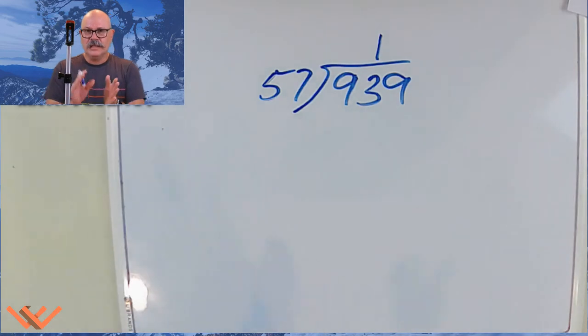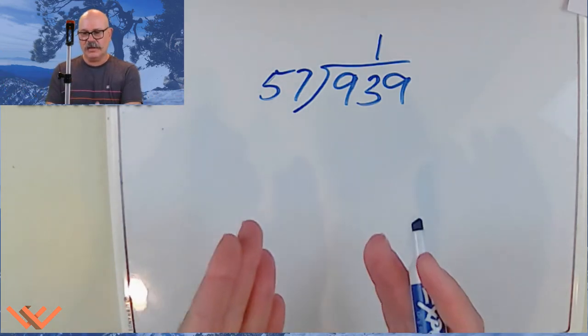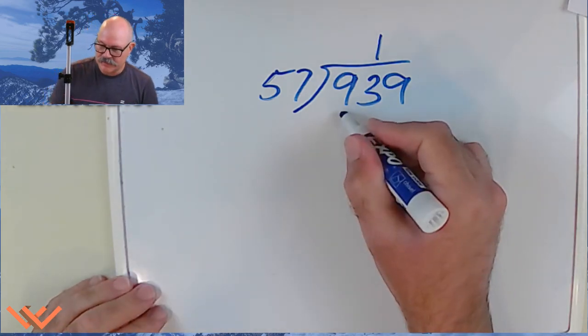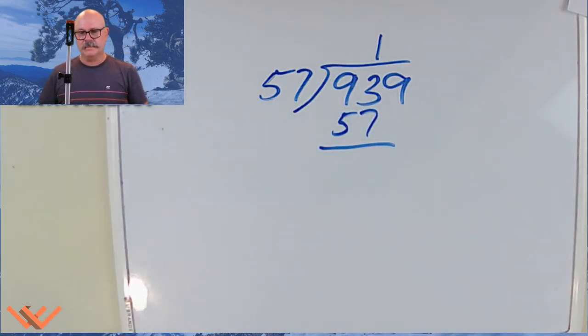Because 2 times 57 is going to be 114. Because that's 50 times 2 is 100. And 7 times 2 is 14. Add them together. We have 114. I can't do that. So, we're going to go with that 1. So, I'm going to have 57.